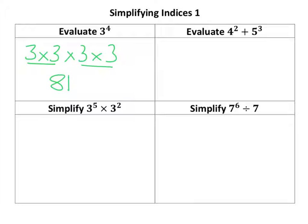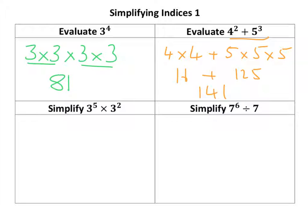Now, if I'm evaluating this expression, 4 squared is 4 times 4, and 5 cubed is 5 times 5 times 5. I've got to do the indices first, so that's 16 and 125 — both ones you should know. Then you add them up, so you should end up with 141.